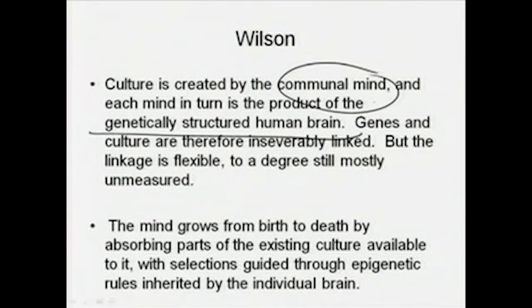Wilson also said that the mind grows from birth to death by absorbing parts of the existing culture available to it, with selections guided through epigenetic rules inherited by the individual brain. Even in Wilson's schema, biology becomes the reference point from which we try to understand culture — through genes, through genetic inheritance — and we try to understand culture as created by a communal mind, each of which is a product of a genetically structured human brain.